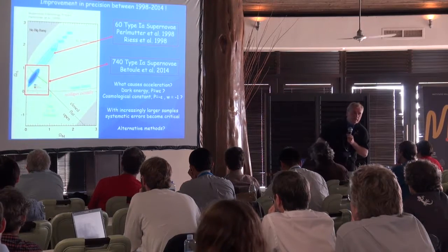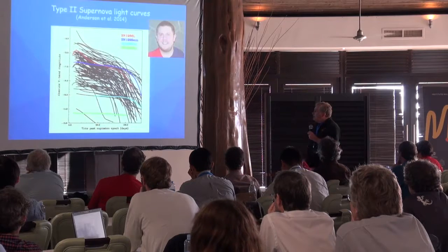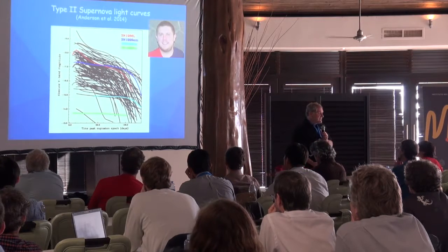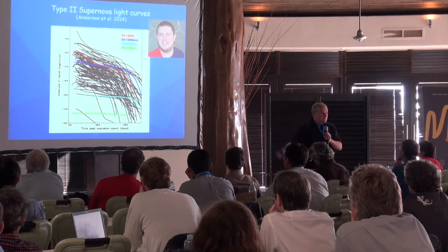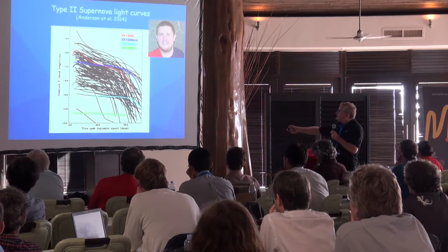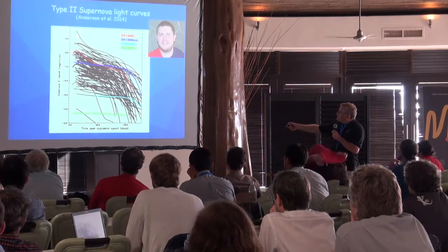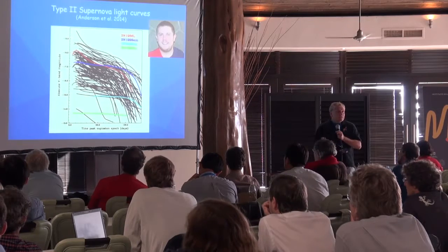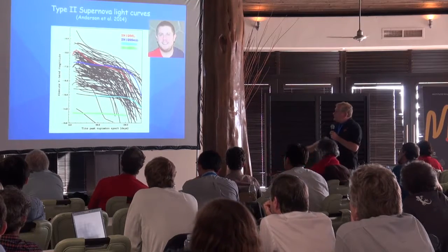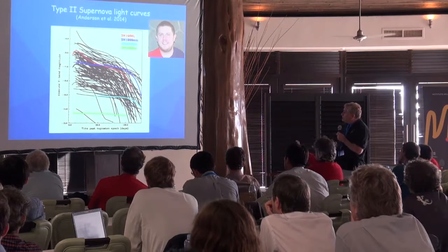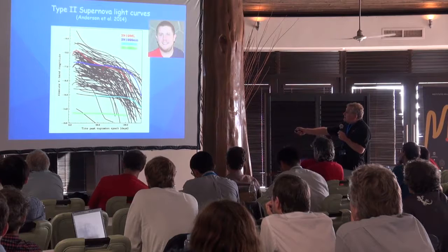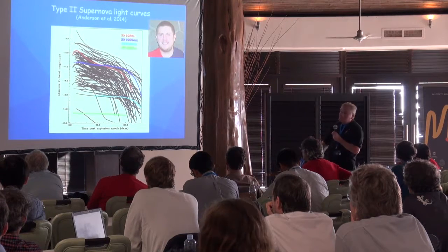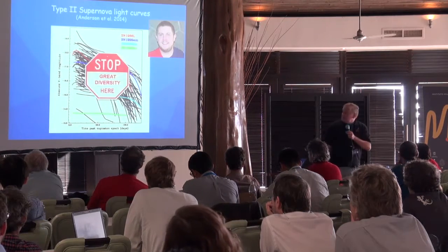Are there other alternative methods? I think the answer is yes, and that's what I'm going to talk about. This is a sample of Type II supernovae — about 100 light curves here, from the paper by Joe Anderson. You can see that in terms of absolute magnitude, there is a great diversity.